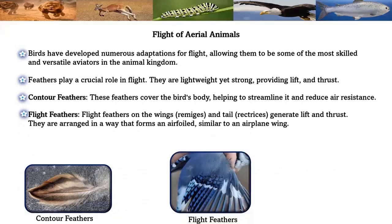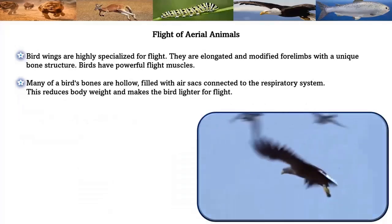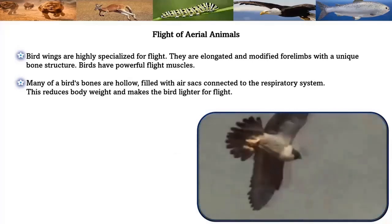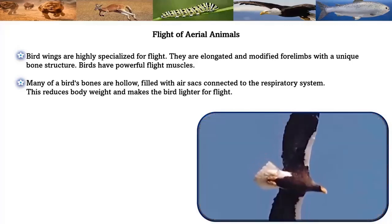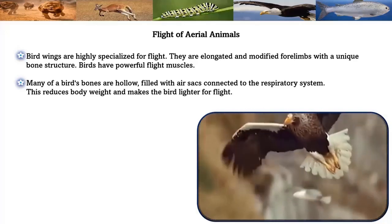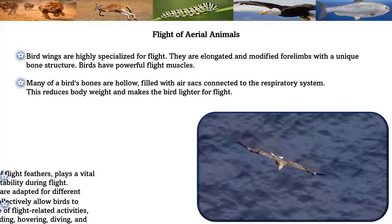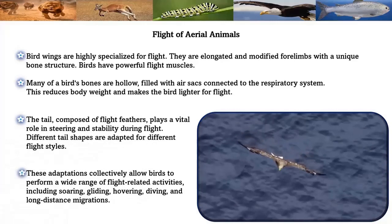Flight feathers on the wings and tail generate lift and thrust, arranged to form an airfoil similar to an airplane wing. Down feathers are soft and fluffy, providing insulation and reducing heat loss during flight. Birds' wings are highly specialized, elongated modified forelimbs with a unique bone structure. Birds have powerful flight muscles, and many of their bones are hollow, filled with air sacs connected to the respiratory system, reducing body weight for flight. The tail also plays a vital role in steering and stability.